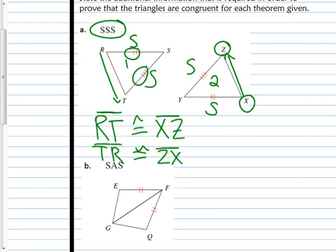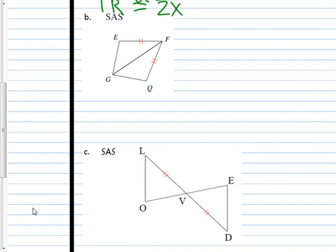And I'll do letter B. I want you to try C on your own. If I want to prove these congruent by SAS, what do I still need? Well, they obviously already have a side and a side. And we know that GF is congruent to GF because of the reflexive property. So there's a side.